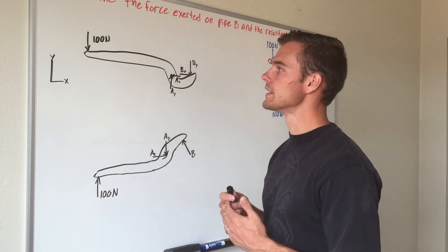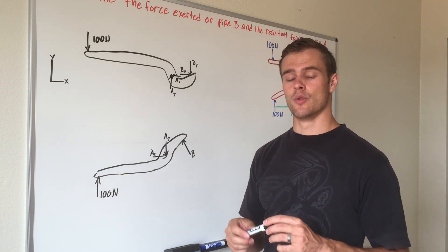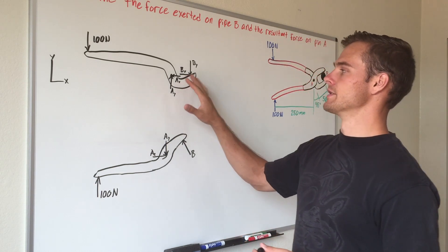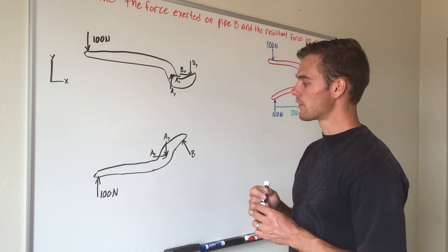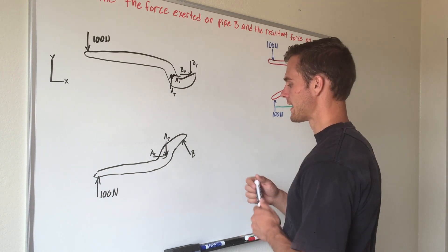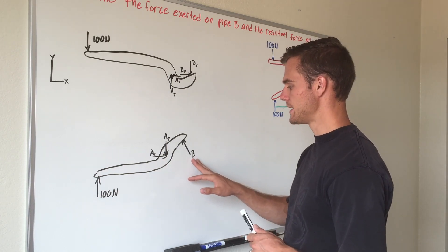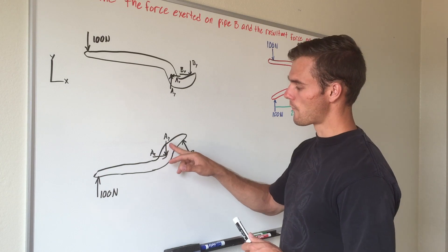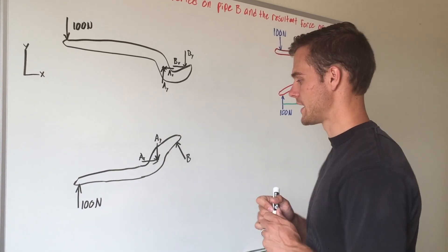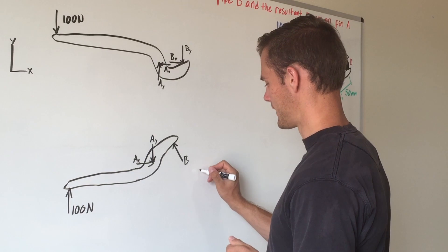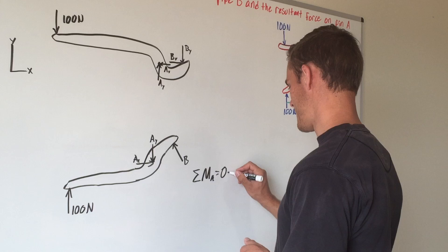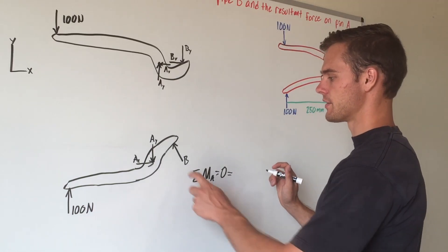But the first thing we need to do is we need to use equilibrium equations to sum forces and moments to find and solve for these unknown forces. And so what we're going to do first is we're going to sum moments about point A on this member. And that will help us find point B because it will cancel out force A sub y and force A sub x because they pass through point A and therefore do not cause rotation. And so we're going to say that the sum of the moments about point A equals zero.